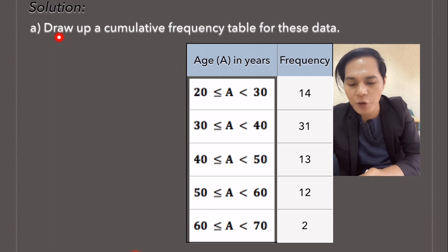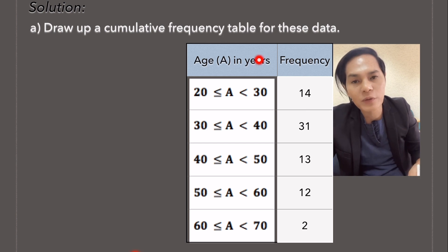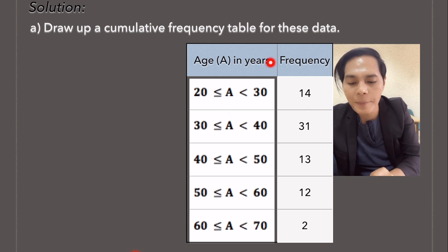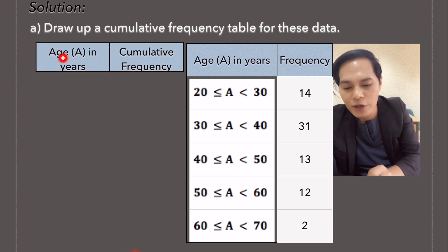Let's start working with letter A, which is draw up a cumulative frequency table for this data. And this is the information that we will be needing. First thing is, look at this. This is age in years and then cumulative frequency. These are the two columns that we will be needing.